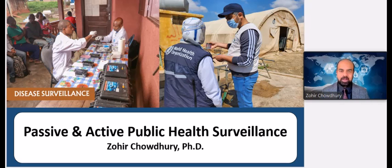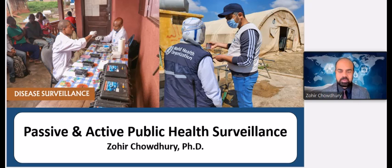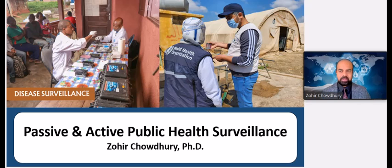Hello everyone, this is Zohir Choudhury. Today we will discuss two important surveillance types that are very common in the field of public health and global health. They are known as active surveillance and passive surveillance.